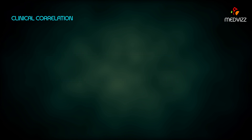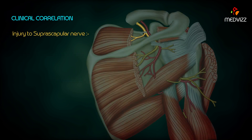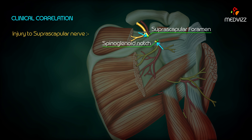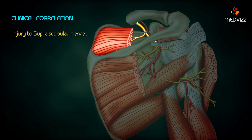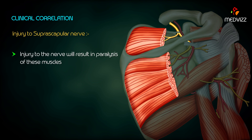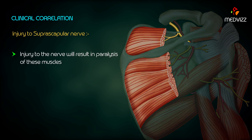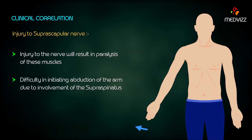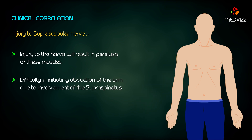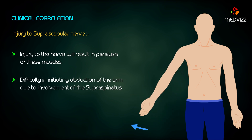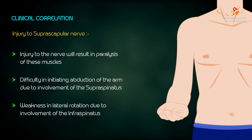Clinical correlation — Injury to the suprascapular nerve: This may result from entrapment of the nerve in the suprascapular foramen or at the spinoglenoid notch. As this nerve supplies the supraspinatus and infraspinatus muscles, injury to the nerve will result in paralysis of these muscles. It results in difficulty initiating abduction of the arm due to involvement of the supraspinatus, and weakness in lateral rotation due to involvement of the infraspinatus.